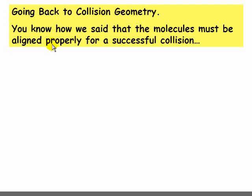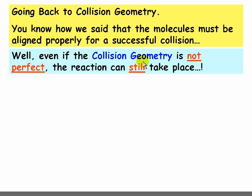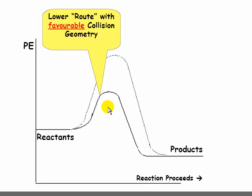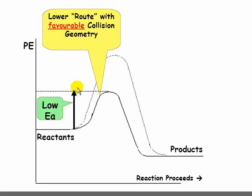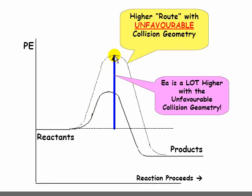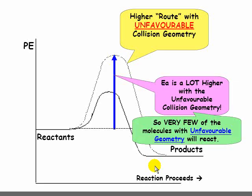Let's go back to collision geometry. Molecules must be aligned properly for a successful collision. Even if the collision geometry is not perfect, the reaction can still take place. However, we have to pay a price — the activation energy will be a lot higher for a collision with unfavorable geometry. The lower route on the graph is for the favorable collision geometry with a quite low EA, so it's not hard for those molecules to make it over the barrier. But the route with the unfavorable collision geometry has very high activation energy, so very few of the molecules with unfavorable geometry will react.